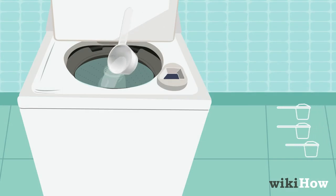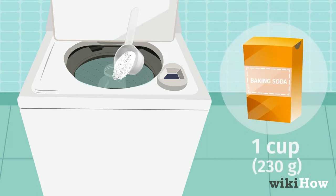Open the lid and pour 4 cups, 945 milliliters of white vinegar directly into the basin. If you like, you can also add 1 cup, 230 grams of baking soda.